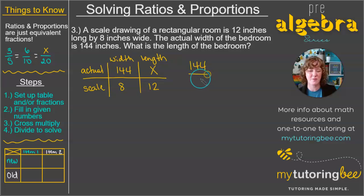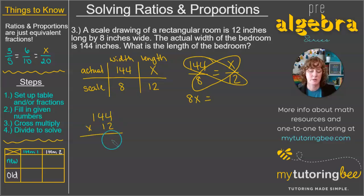So let's set up our fractions. 144 over 8 equals x over 12. All right, we've got 8x for the one diagonal multiplication, and then we've got 144 times 12. Let's see what that is. 2 times 4 is 8, 2 times 4 is 8, 2 times 1 is 2. Drop down by 0. And then we've got 4, 4, 1. All right, add these up. And then it looks like we're looking at 1,728.